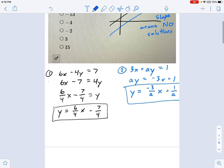So where is the slope the same? Or in other words, where is 6 fourths equal to negative 3 over a? Well, we can solve this. This is not a hard equation. Multiply both sides by a. See what that does? It cancels out the a's. Multiply both sides by 4. Now I cancel out the 4's.